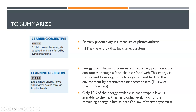To summarize: primary productivity is a measure of photosynthesis, but net primary productivity — after we've taken out plant tax — is the energy that fuels an ecosystem. Energy from the sun is transferred to the primary producers via net primary productivity, and then to consumers through a food chain or food web. Energy is transferred from organism to organism and back to the environment by detritivores and decomposers — that's our first law of thermodynamics. The pyramid shape exists because only 10% of the energy at each trophic level passes to the next, as much of the remaining energy is lost as heat — our second law of thermodynamics.